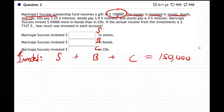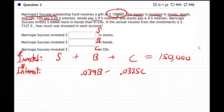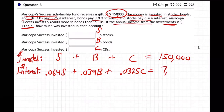Next, the interest equation. The CDs pay 0.0325C, bonds pay 0.039B, and stocks pay 0.064S. These must add up to equal the total interest income, which is $7,127.50. When the problem says annual income from investments, it means the interest income earned.